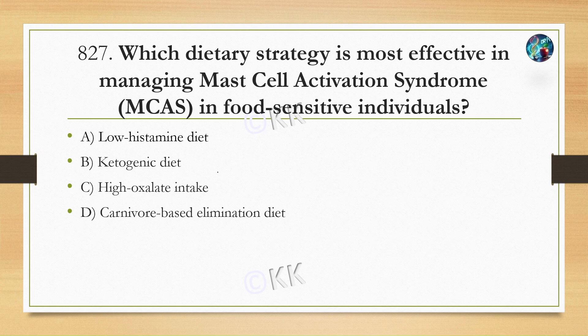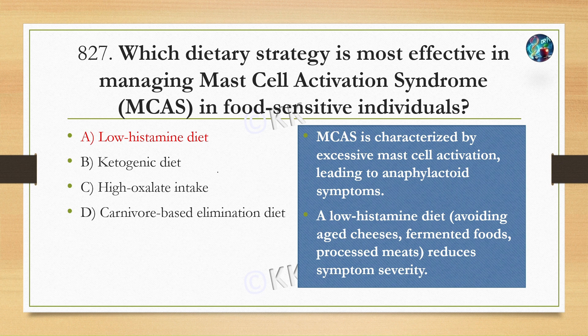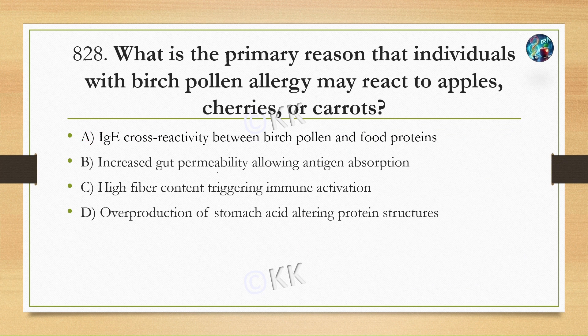The correct option is A — low histamine diet. यह mast cell activation syndrome है, it is characterized by excessive mast cell activation leading to anaphylactoid symptoms. Low histamine diet, like avoiding fermented food, processed meat etc., reduces the symptom severity.